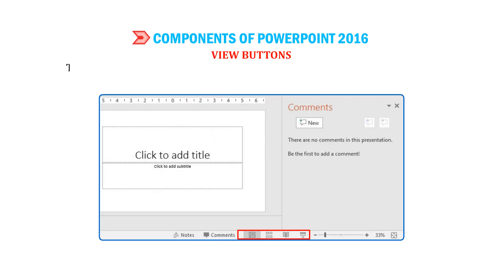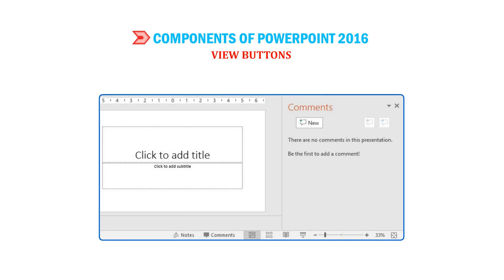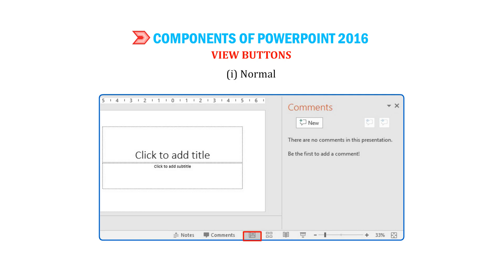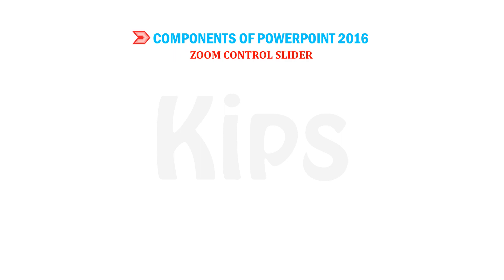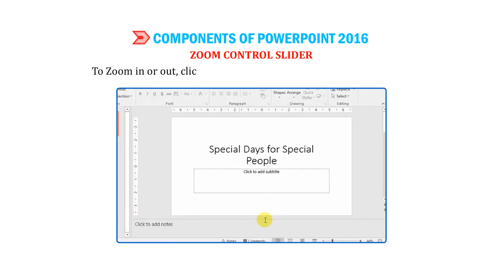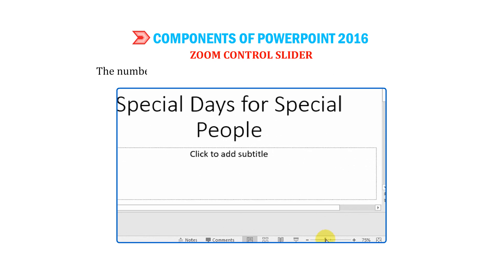View Buttons: The View Buttons are displayed towards the left of the Zoom Control slider on the Status Bar. You can view the slides in different formats: Normal, Slide Sorter, Reading View, and Slideshow. Zoom Control Slider: To zoom in or out, click and drag the slider to use the Zoom Control. The number to the right of the slider reflects the Zoom Percentage.